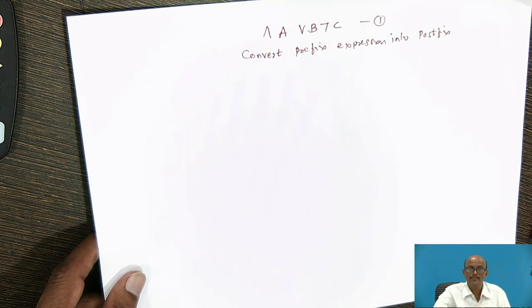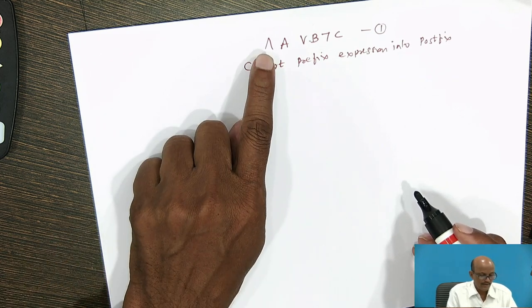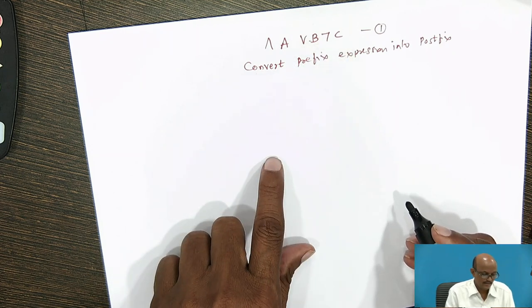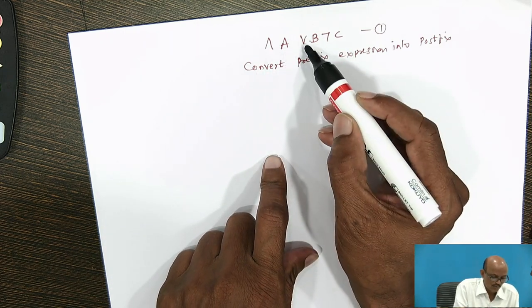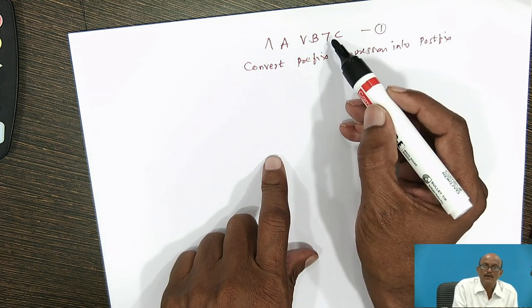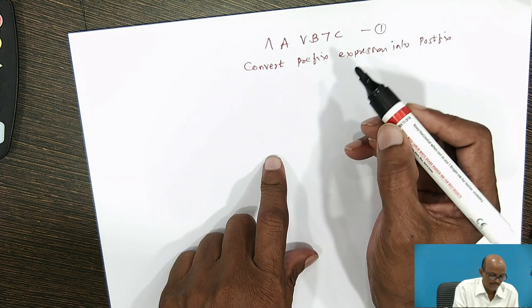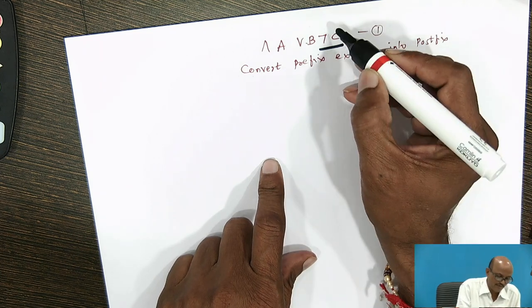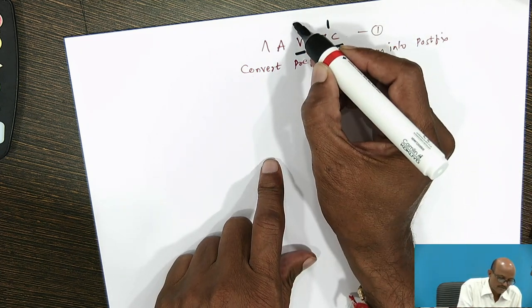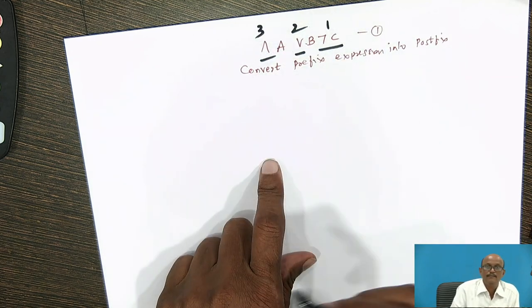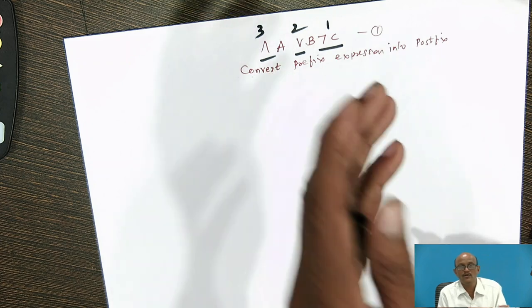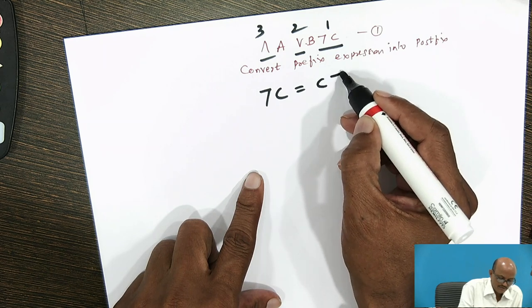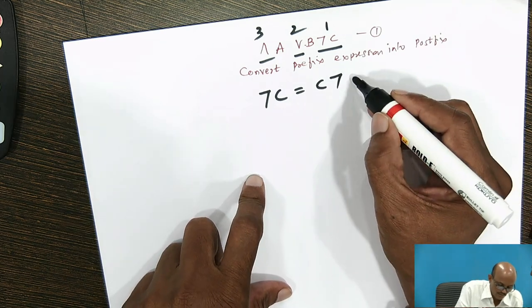Let us consider one more example. The expression is AND A OR B NOT C — equation number one. The number of operators is three: two OR operators and one NOT (negation). The rightmost operator is negation, so negation C will be evaluated first, then OR second, then AND third. Convert negation C to postfix: that gives C NOT, equal to T1.